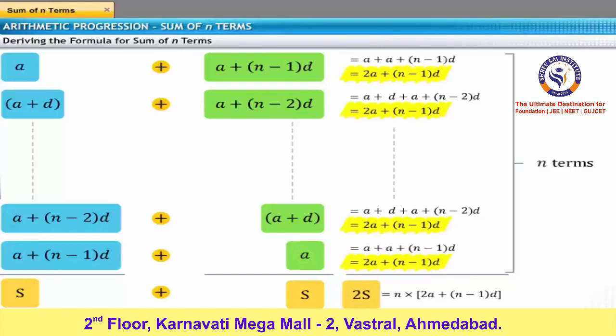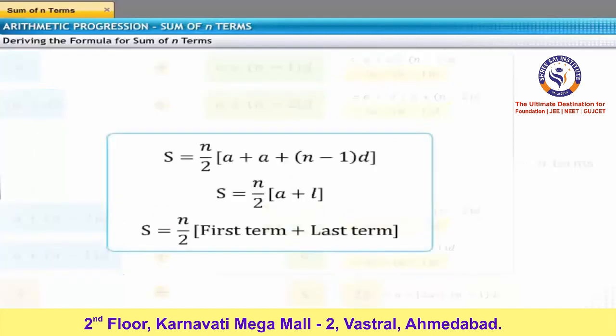So, to get S, that is, the sum of N terms of an AP, you have to divide the equation by 2. Thus, you get the formula: S equals N divided by 2, multiplied by [2A plus (N minus 1) multiplied by D]. On further simplification, the sum of N terms in an AP is S equals N divided by 2, multiplied by (first term plus last term).